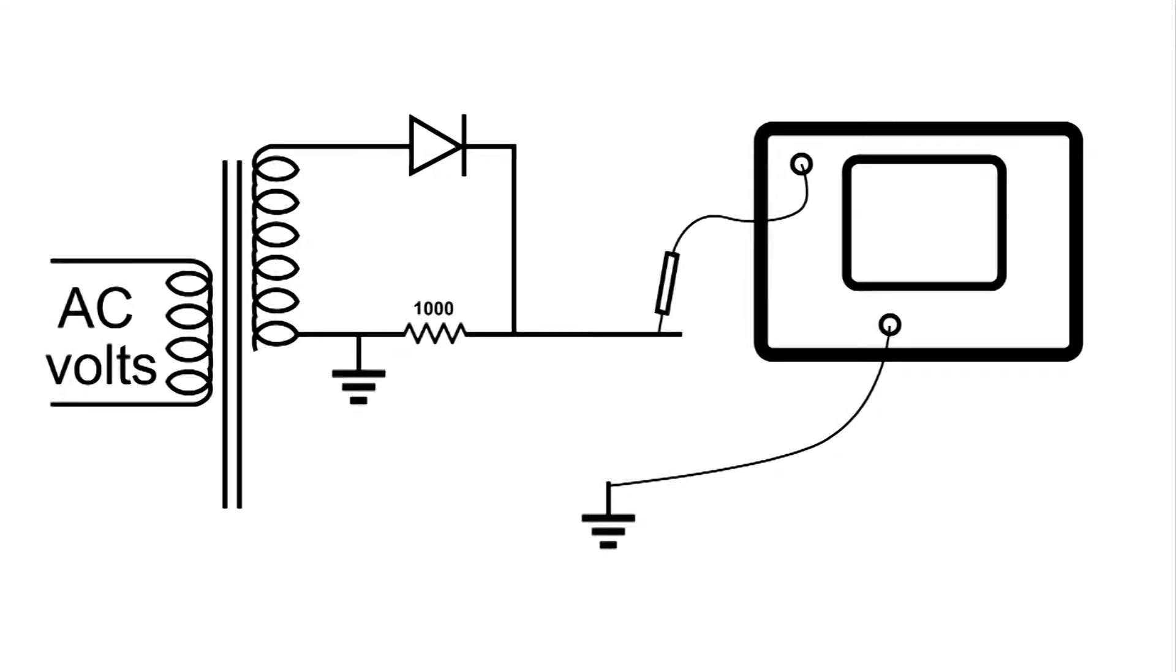In this video I'm going to use an oscilloscope to show a half-wave rectifier and a full-wave rectifier. Also I'm going to add a capacitor to both so you can see the effect of putting an electrolytic capacitor in the circuit.